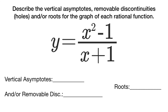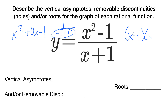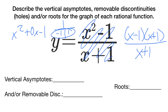For the next example, the top is x squared minus 1. Using difference of squares — or thinking of it as x squared plus 0x minus 1 — we get x minus 1 times x plus 1, all over x plus 1. The x plus 1 factors cancel, so that is a removable discontinuity at x equals negative 1. There are no remaining denominator factors, so there are no vertical asymptotes. The remaining numerator factor x minus 1 gives a root at x equals 1.